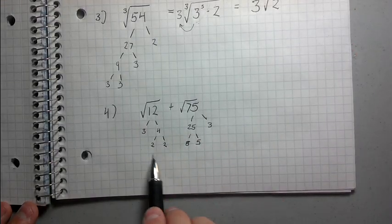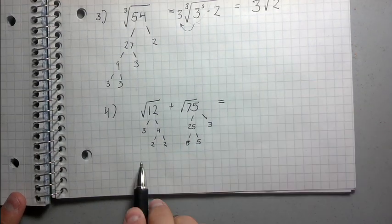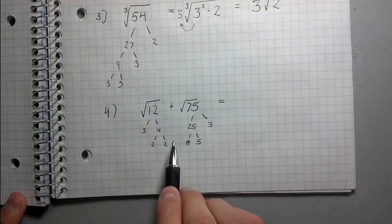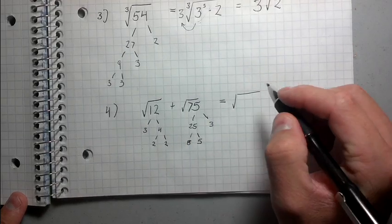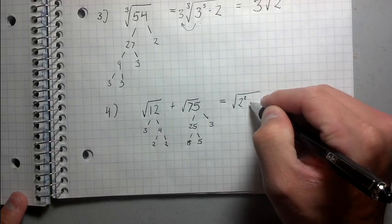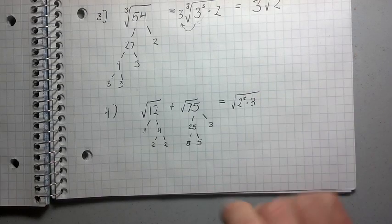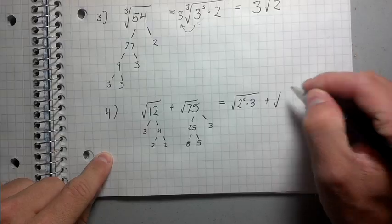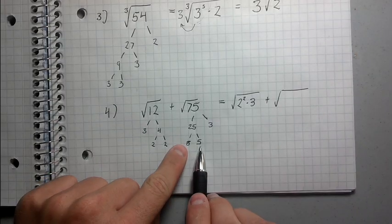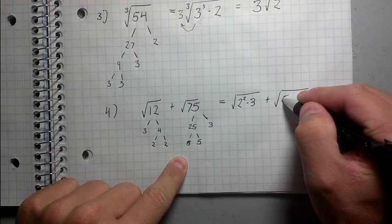So using these factor trees, I'm going to rewrite this problem in the prime factorization mode. Okay. So instead of root 12 plus root 75, I'm going to have root of 2 squared times 3 because of this factor tree, 2 squared times 3 plus 5 squared times 3.